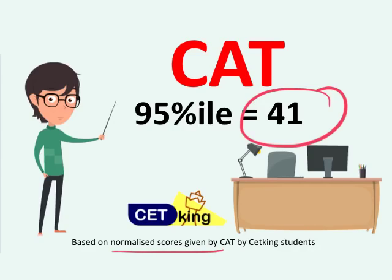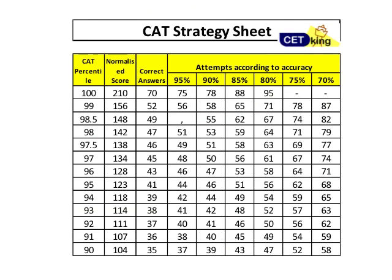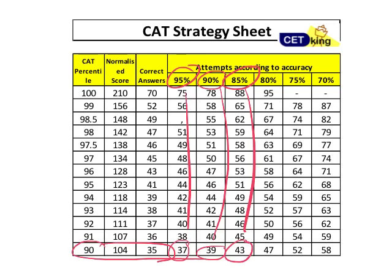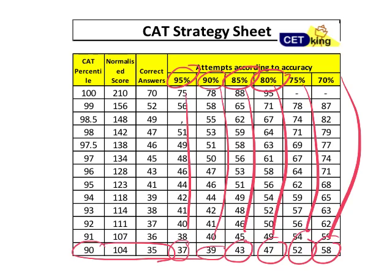To score 90 percentile, you just need 35 marks. If your accuracy is 95%, then you need to attempt 37 questions. If accuracy is 90%, attempt 39 so you can afford 4 wrong. For 85 percentile, attempt 43; for 80 percentile, attempt 47; for 75 percentile, attempt 52; and for 70 percentile, attempt 58.